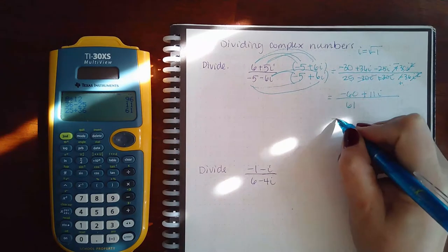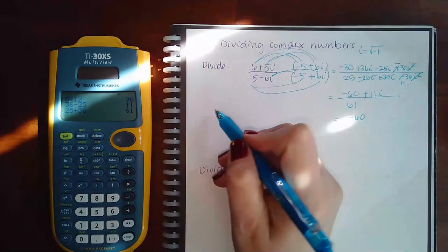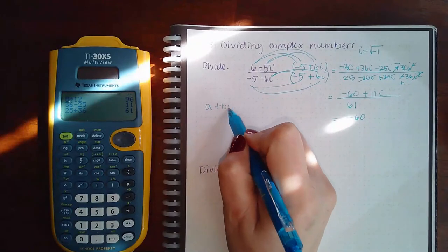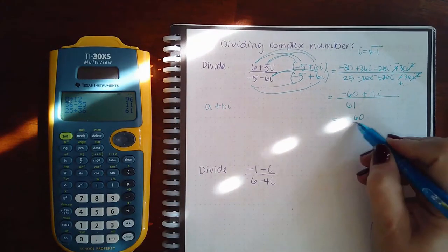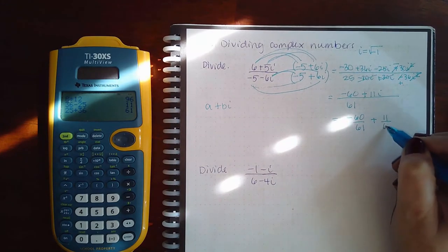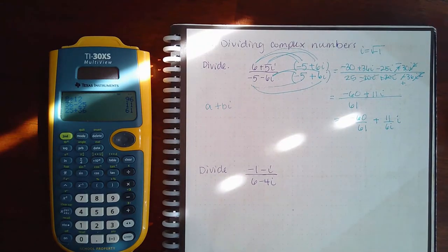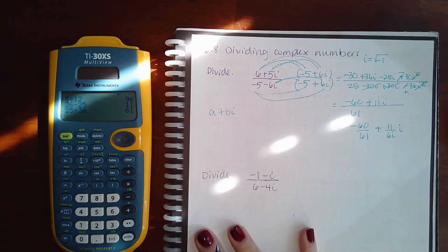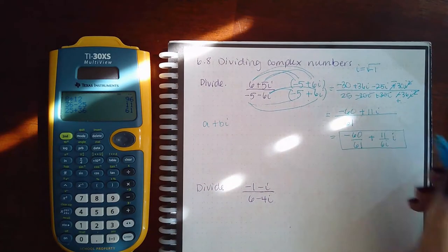Unfortunately, you cannot simplify this. But if they want your response to be in this form, you have to separate the fraction. We'll have negative 60 over 61 plus 11 over 61 with the i on the side. Make sure that we split that fraction up so that it's in the form a plus bi.